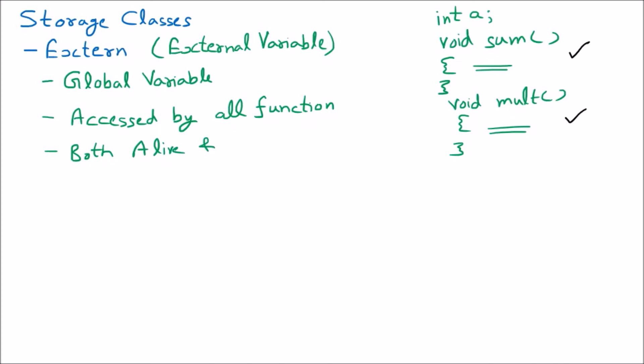Alive means that throughout the whole program something is present — that is called alive. And even though it is present and in use, meaning we can update it or read its value, that means it is active. So it is alive and active throughout the program — until the program is running, it will be active and alive.